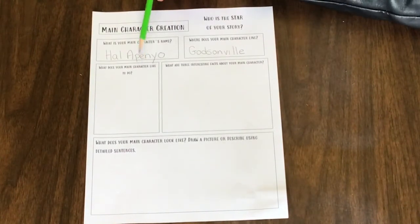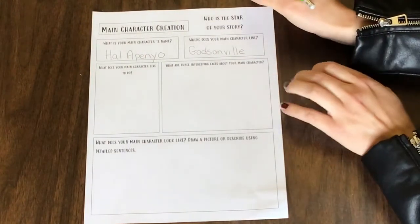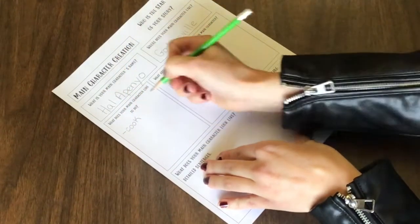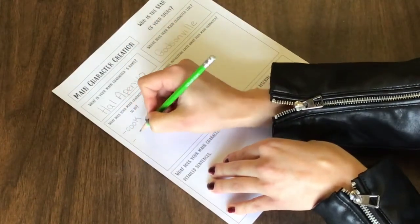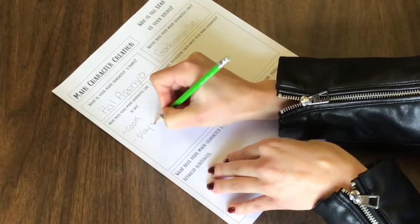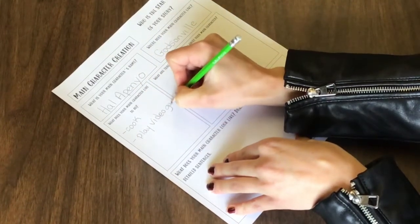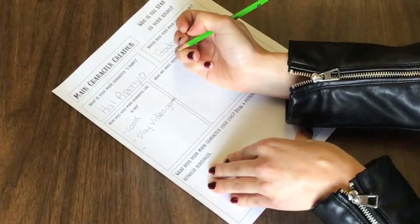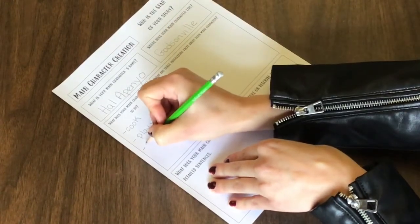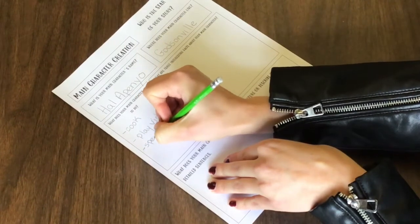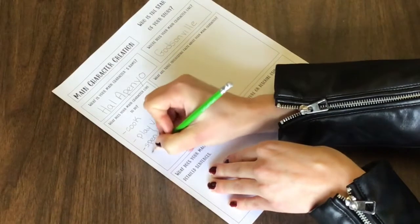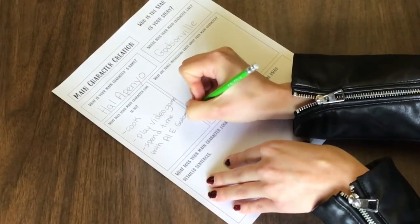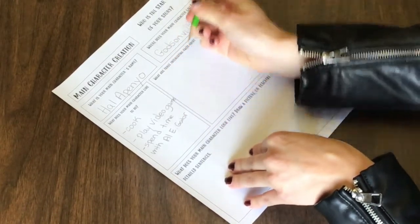Next, what does your main character like to do? So I've thought about a few things that my main character likes to do. My main character likes to cook. My main character likes to play video games. And the person that he likes to play video games with is his best friend, my side character. And he likes to spend time with his friend, Alligator.